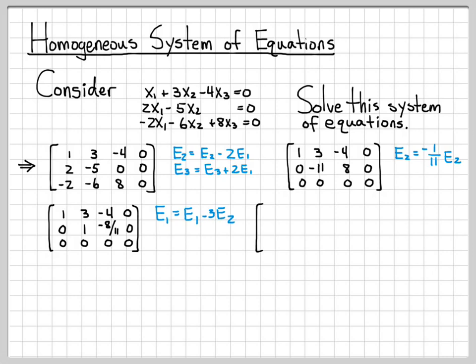Then let's let the first equation equal itself minus three times the second equation to get a zero in there. The first row becomes one, zero, negative four plus twenty-four over eleven. The second and third rows remain unchanged. If I simplify this, negative four plus twenty-four over eleven is negative twenty over eleven.